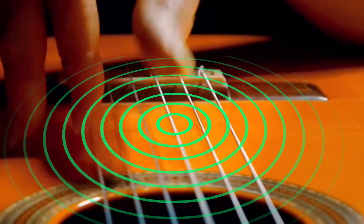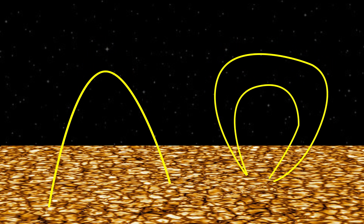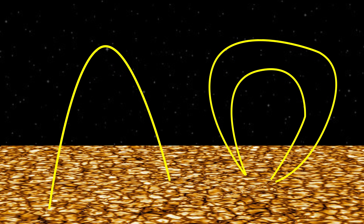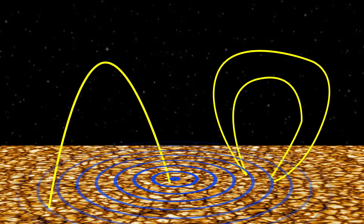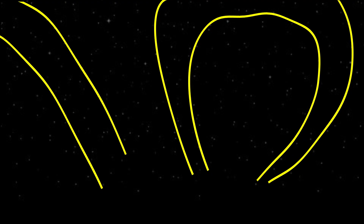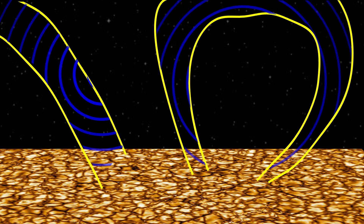And the second reason is Alfvén waves. One amazing way to visualize these is the strings of musical instruments. As I pluck the string, it sends waves in the air molecules. Similarly, these stretchy magnetic fields stretch, and their restoring force is sent as a wave in the sun's plasma. These waves carry energy from the convective layer of the sun, climb along the magnetic fields, and dissipate their energy into the corona as heat.